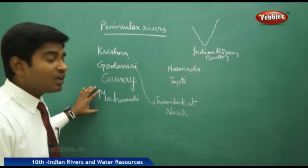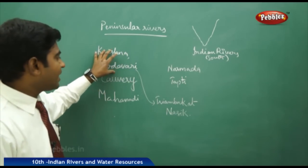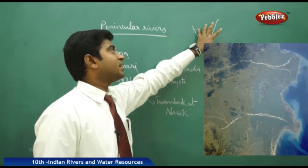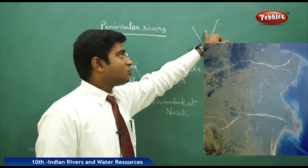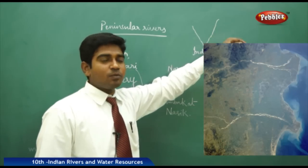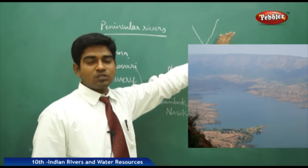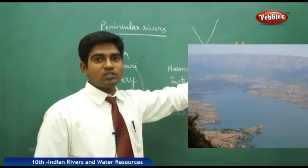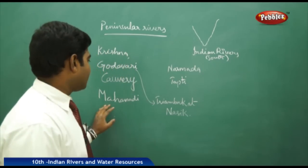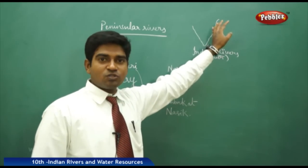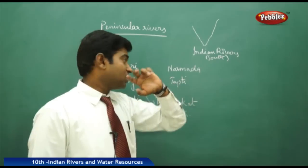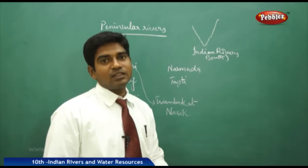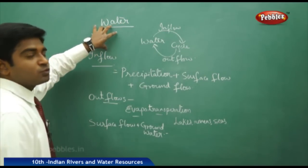The major rivers of Peninsular India are Krishna, Godavari, Kaveri, and Mahanadi. Godavari is the largest, starting its journey at Triyambakeshwar near Nasik in Maharashtra, flowing towards Andhra Pradesh and joining the Bay of Bengal. The Krishna also starts in Maharashtra and flows towards Andhra Pradesh into the Bay of Bengal. Kaveri originates in Karnataka, flows towards Tamil Nadu, and falls into the Bay of Bengal. Mahanadi starts from Odisha and flows eastward into the Bay of Bengal. Only Narmada and Tapti flow westward into the Arabian Sea.